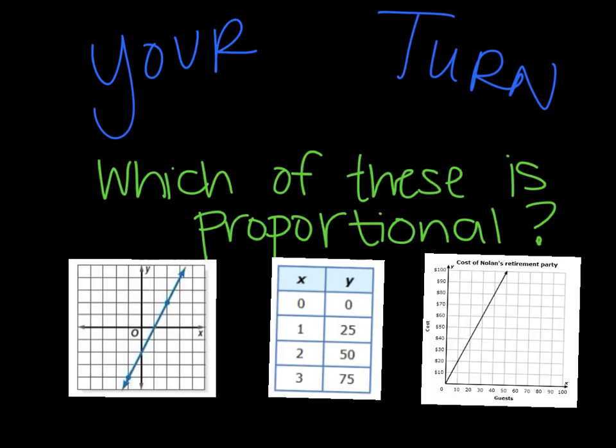All right. Answers for you. The first one is not proportional because it does not go through the origin. The next one, you actually have to extend out that table for y over x. Now it's okay that you have 0, 0 over here because that's a requirement of proportional relationships.